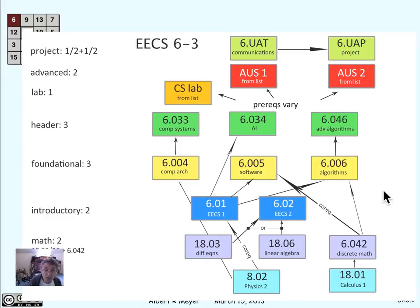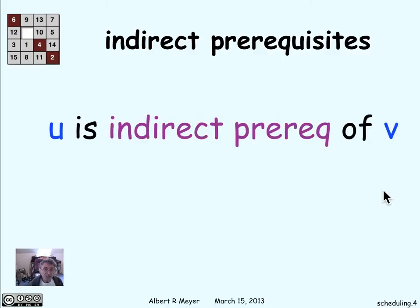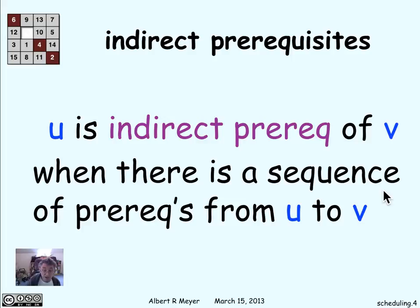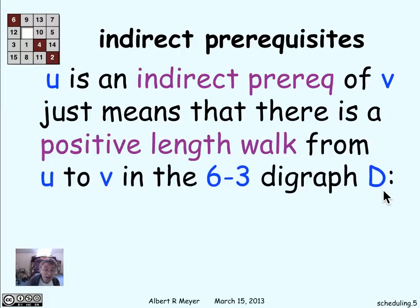It's simply a bunch of vertices — the course labels in rectangular boxes — and directed arrows showing catalog listings. When you're planning your coursework, you're really interested in the indirect prerequisites. One class U is an indirect prerequisite of another class V means that there's a sequence of prerequisites starting from U and going to V, meaning you really have to have taken U sometime before you took V. In digraph language, U is an indirect prerequisite of V means there's a positive length walk from U to V in the digraph — in this case, the 6-3 digraph of prerequisites.